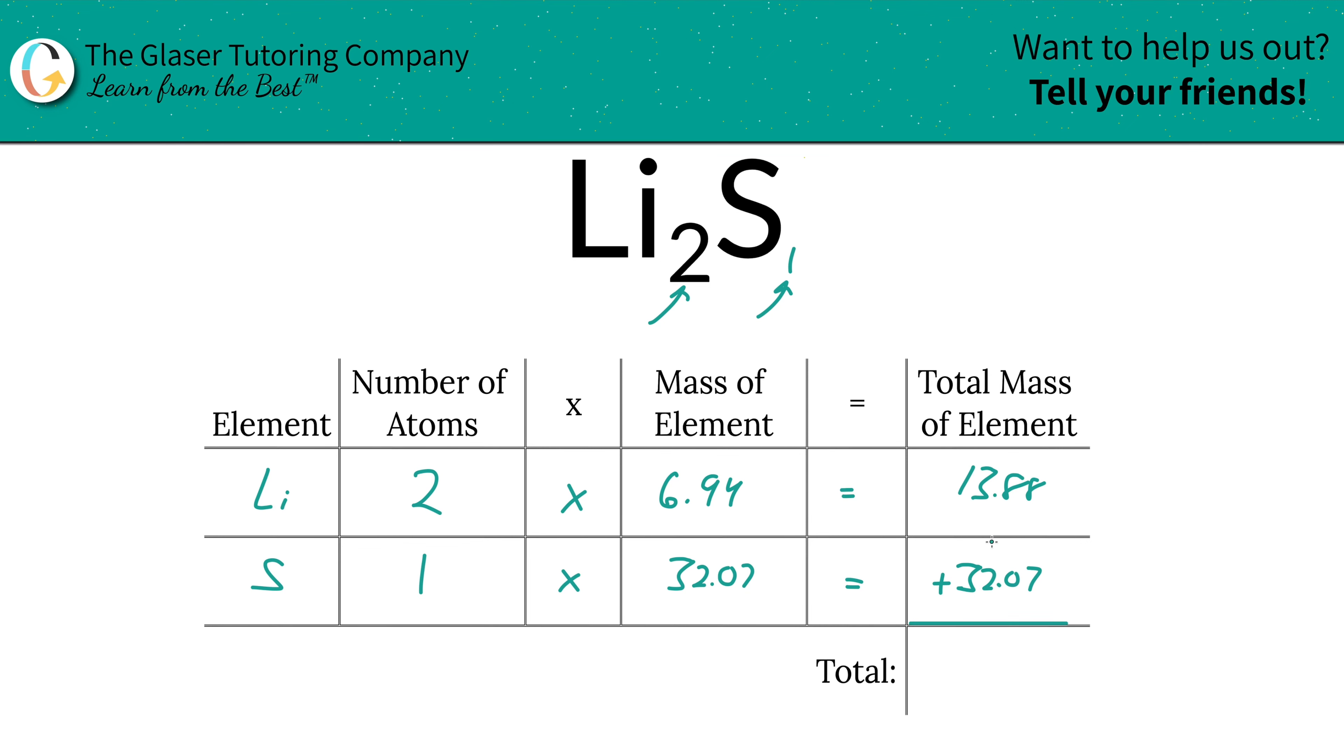And then I think you see where we're going - to find the total mass of the entire compound we simply add up this column. So that's going to be 45.95. And there it is, that's the total mass. That was the first step.